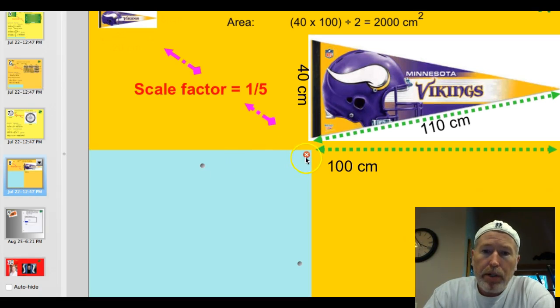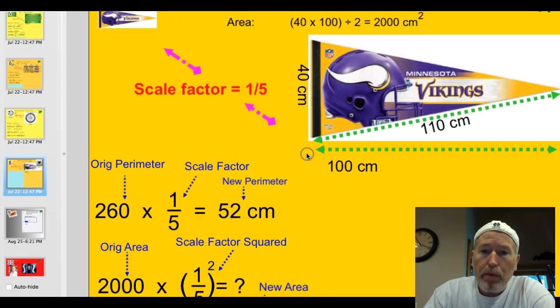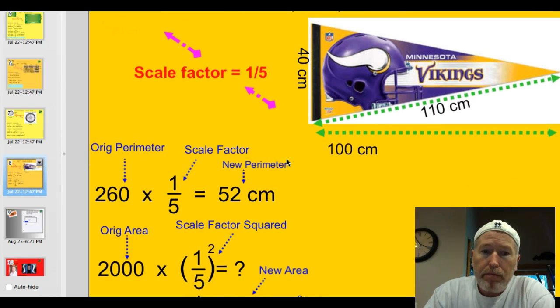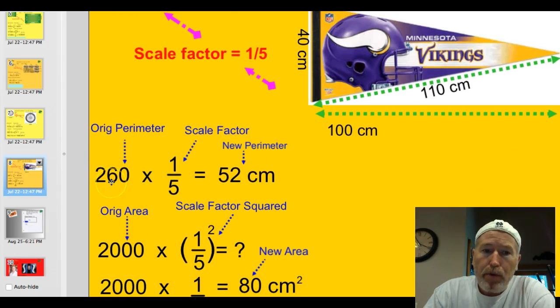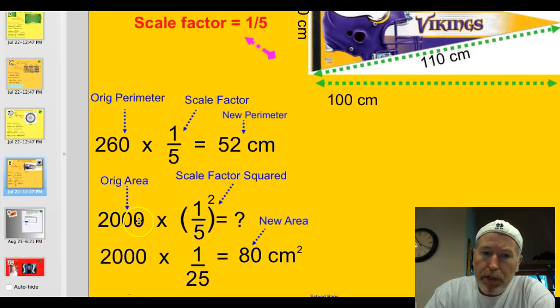So, let's use that and see if you were able to determine the perimeter and area of the smaller one using the scale factor. So, the original perimeter was 260. We multiply that times 1 fifth. You put that into the calculator as 0.2 if you want. And, you get 52 centimeters, which is correct. The original area was 2,000 times that scale factor, 1 fifth squared. Well, 1 fifth squared is really 1 25th. So, 2,000 times 1 25th gives us 80 centimeters squared.